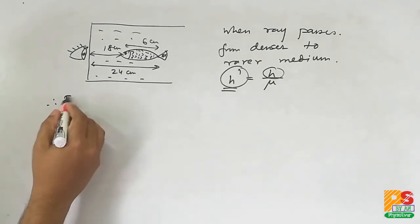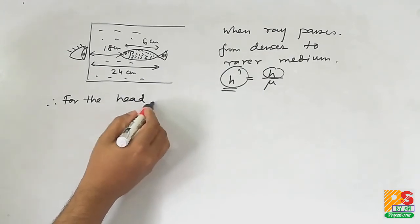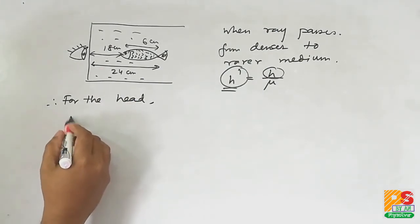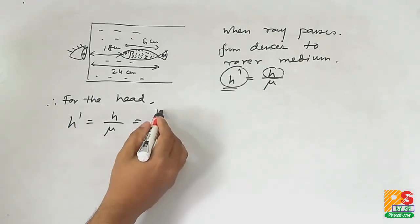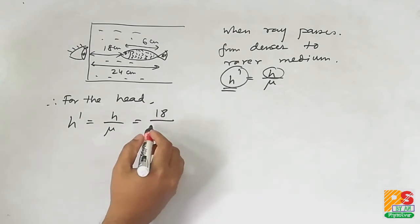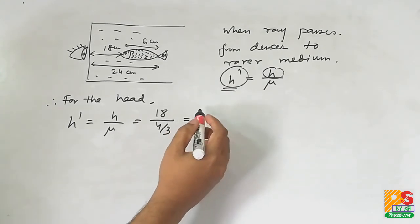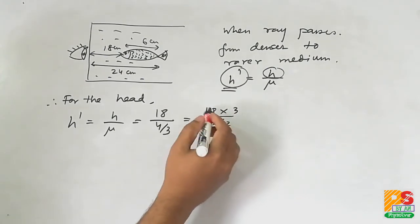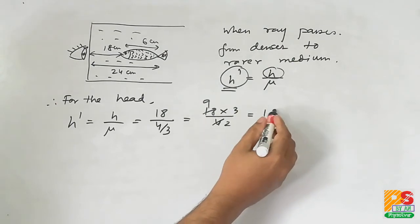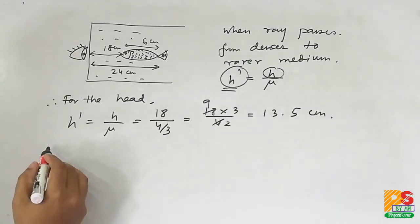Now for the head of the fish, real depth is 18 centimeters and μ is 4/3. Putting the values, h' is 13.5 centimeters.